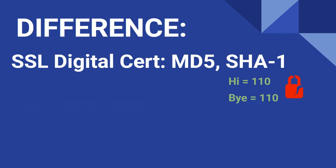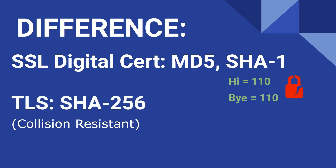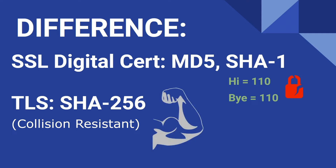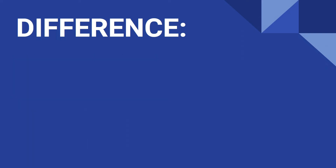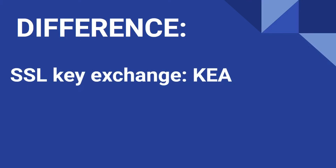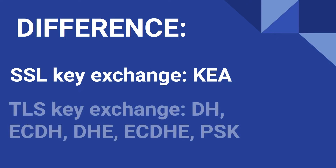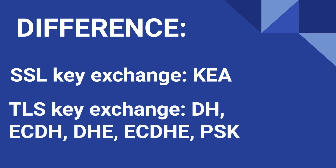Ideally, hashing functions should never produce the same output given any change to the input. TLS uses SHA-256, which is called collision resistance — you can have an infinite number of inputs that will never produce the same output, at least with today's modern computing power. There are also differences in the algorithms used for key exchange. SSL can use KEA, or Key Exchange Algorithm, which is based on Diffie-Hellman. TLS uses Diffie-Hellman (DH) variations, which are asymmetric algorithms, or PSK, which stands for pre-shared key protocol.